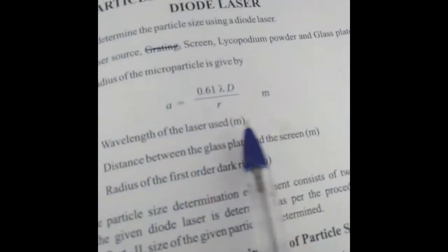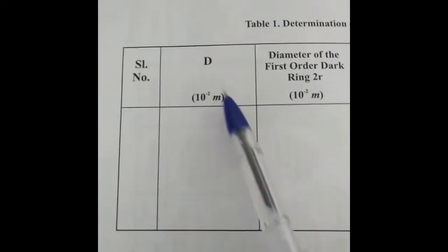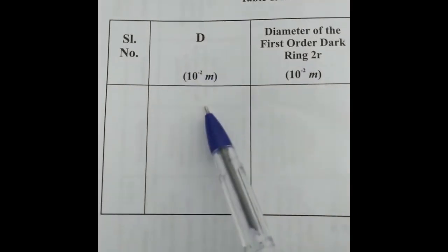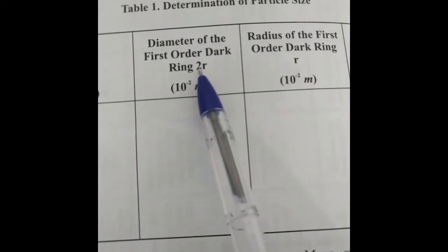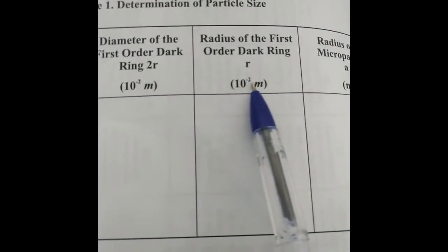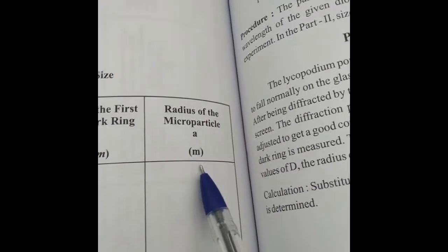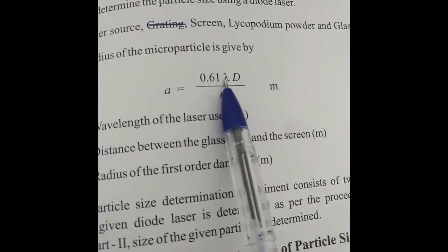That is the experiment you need to do, and for calculation purposes the formula is A = 0.61 lambda d by R. This is the tabulation for which you are going to use the observed readings. You need to put five serial numbers. D represents the distance between the lycopodium slide and the screen. Keep the slide at five different distances and measure the diameter of the first order dark ring. This gives you the value of 2R. Divide by 2 to get R, the radius. Then find the particle size A using the formula A = 0.61 lambda d by R. The value of lambda can be taken as 6000 Angstrom units.